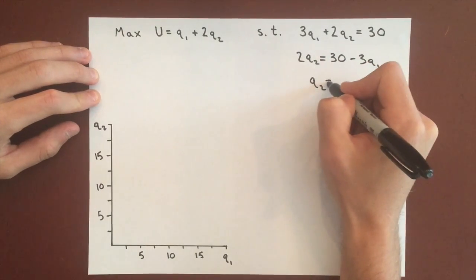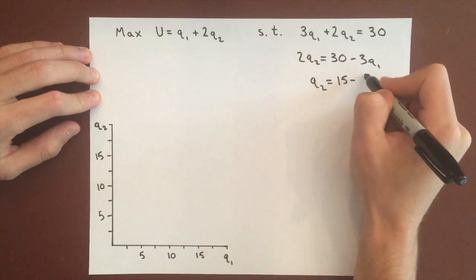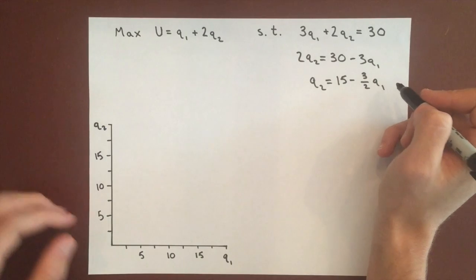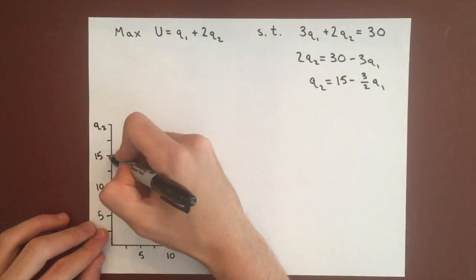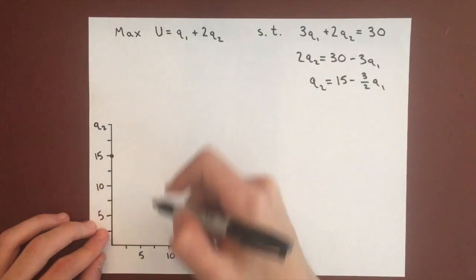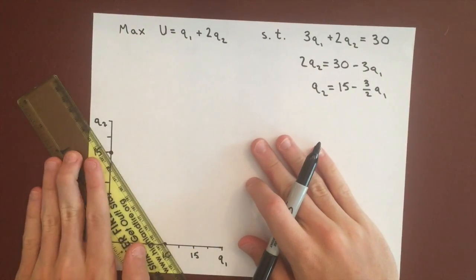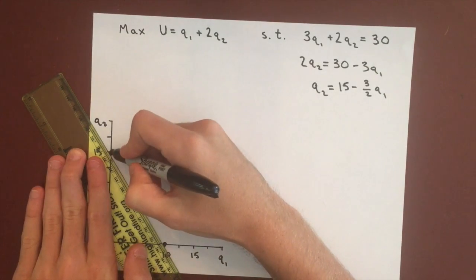Then Q2 equals 15 minus 3 over 2 Q1, so we can graph that over here. 15 is our y-intercept and 10 will be our x-intercept, and we can connect these just with a straight line like all our budget equations.